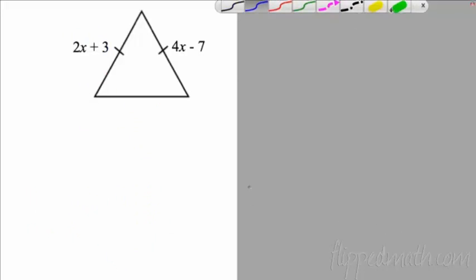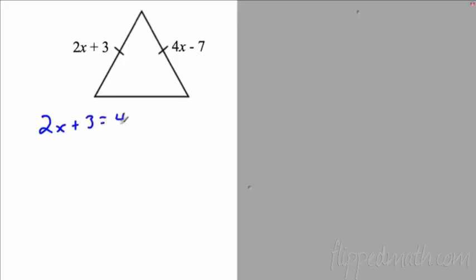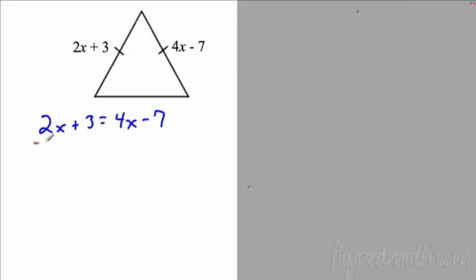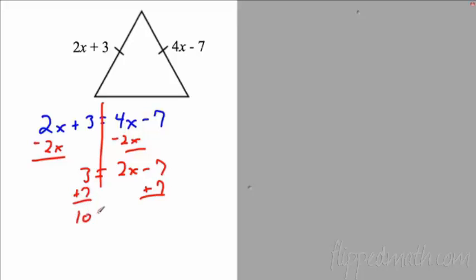Here's another isosceles triangle example. This time I give you the sides are congruent: one side is 2x plus 3 and the other side is 4x minus 7. Since they're congruent, they equal each other. Set them equal: 2x plus 3 equals 4x minus 7. Get all your x's on one side — we get 2x minus 7 equals 3, then add 7 to both sides, and we get x equals 5.